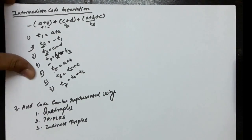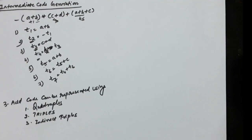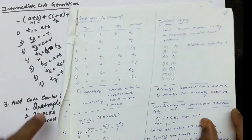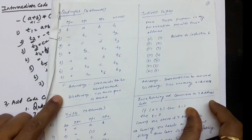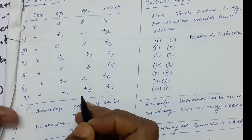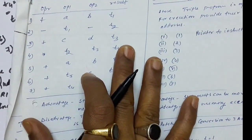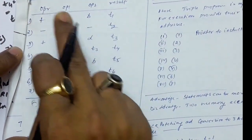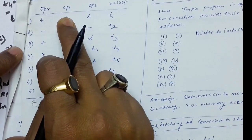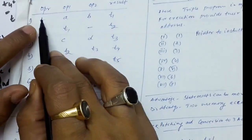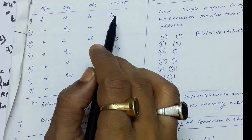The intermediate code remains the same; it is just represented differently. Quadruples, as the name suggests, have four elements. The four elements are: operator, operand one, operand two, and result. For example, to represent t1 equals a plus b, the operation is plus, the operands are a and b, and the result is t1.